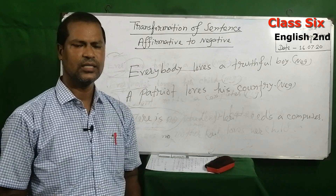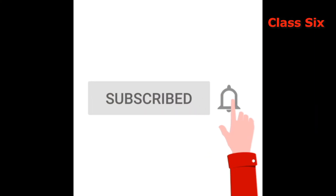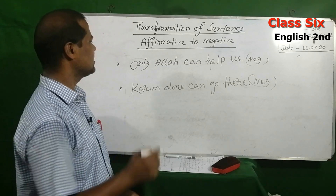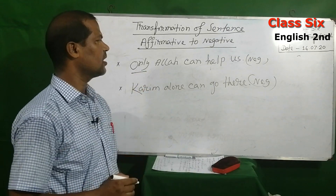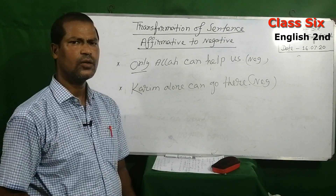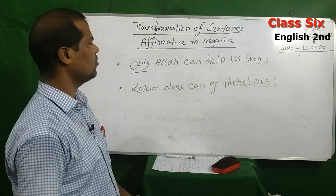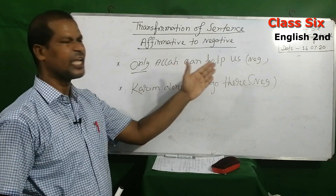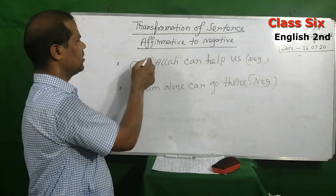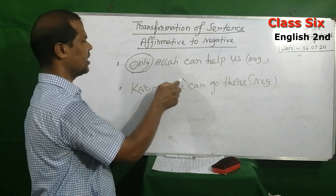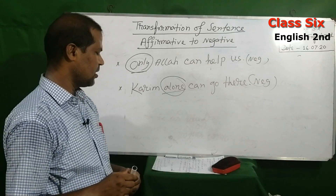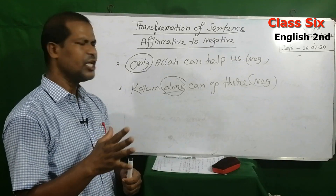Now we will discuss the next rule. Here are two sentences: 'Only Allah can help us' and 'Korim alone can go there.' We can see 'only' in the first sentence and 'alone' in the second. When you see 'only' or 'alone' in a sentence, a different rule applies.